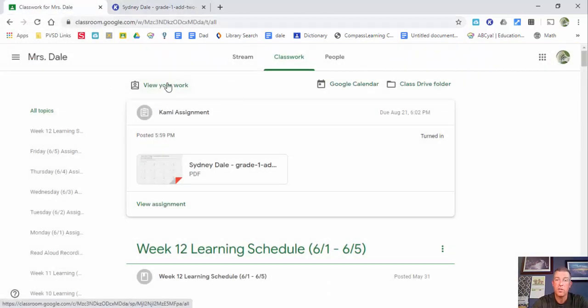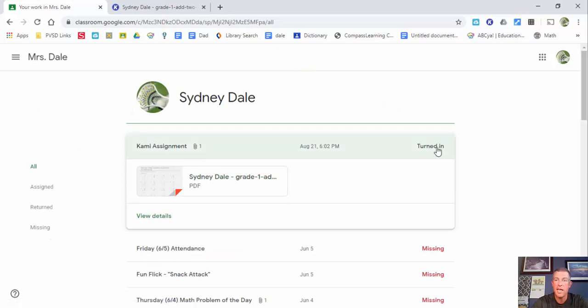So we can select done. We can now go back to classwork and we can see if we go into view the work, it has been turned in, so we're good to go. There you go, that is a brief tutorial on Kami. Thank you so much for watching. Take care, bye.